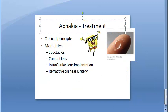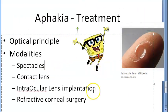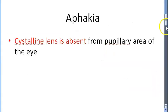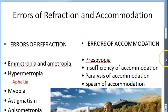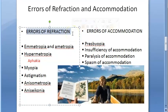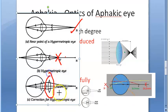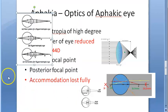Now let us move on to treatment. The principle is to correct the refractive error - aphakia is an error of refraction. You will give this person a convex lens of appropriate power so that the image is formed on the retina. The key word to write is: give a convex lens.